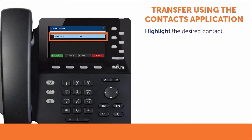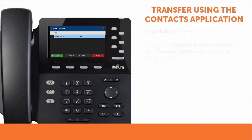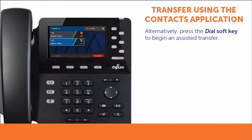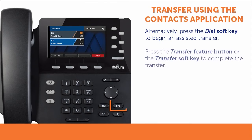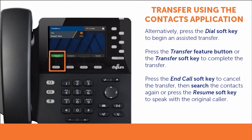Once you find the contact you want, be sure it is highlighted. To complete a blind transfer, press the transfer feature button or transfer soft key. To begin an assisted transfer, press the dial soft key. When you press dial, you begin a new call to the contact to whom you are attempting to transfer. If you wish to complete the assisted transfer, press the transfer feature button or transfer soft key while speaking with your contact. If you wish to cancel the assisted transfer, press the end call soft key. You may then repeat the contact search process or press the resume soft key to speak with the original caller.